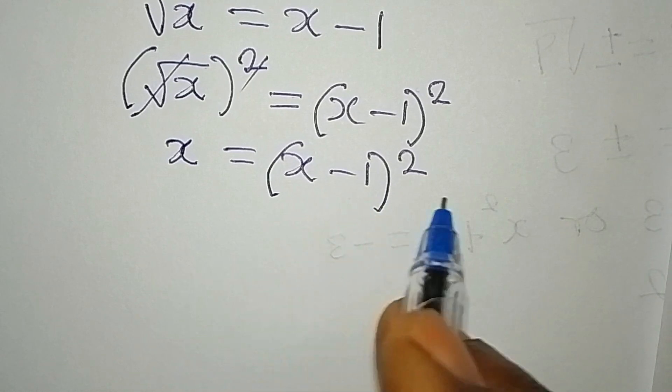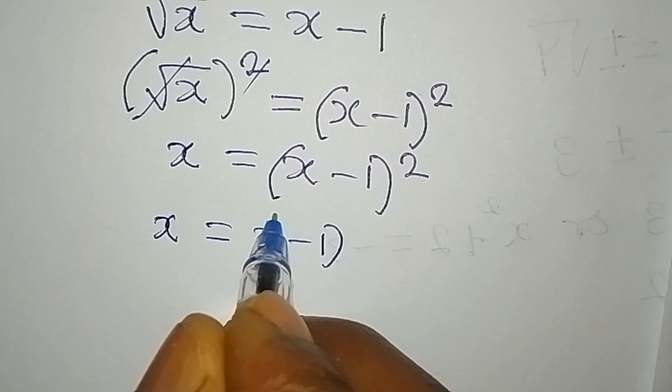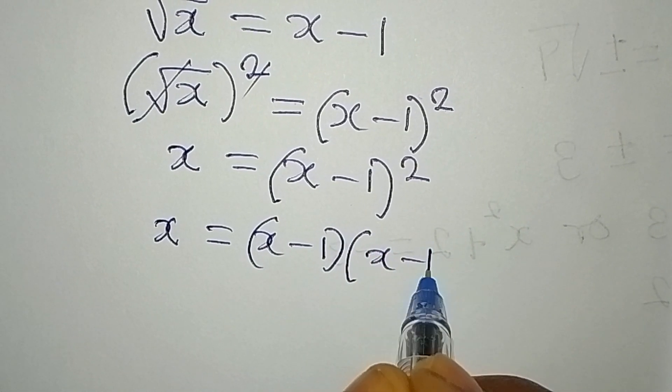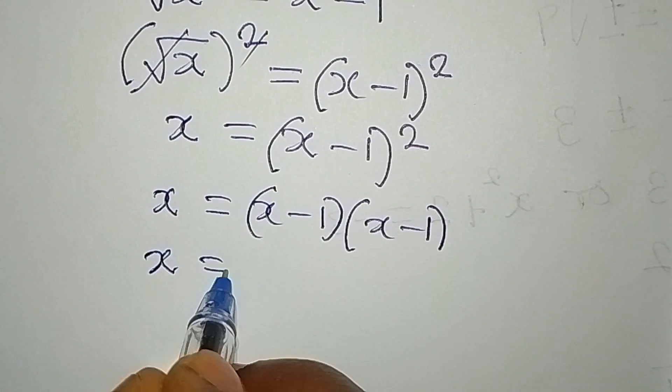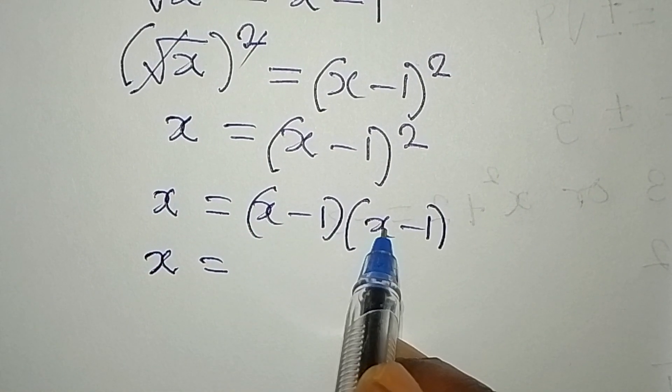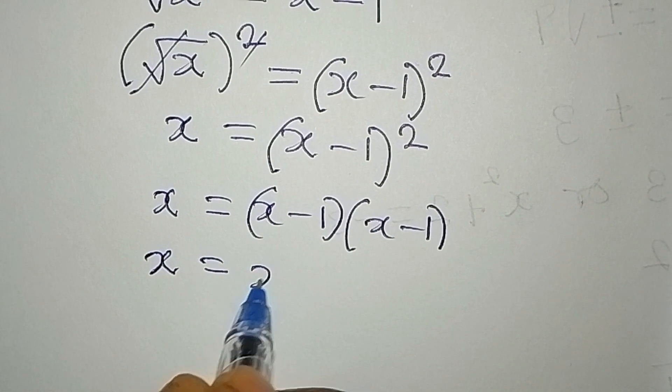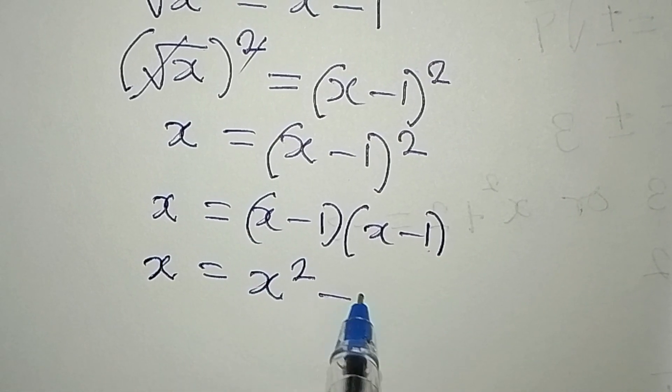Mind you, x minus 1 to the power of 2, that would be x minus 1 into x minus 1. Then we'll multiply by opening the bracket. As we open the bracket, this multiplied by this is x squared. Then this multiplied by this is negative x. This multiplied by this is another negative x.